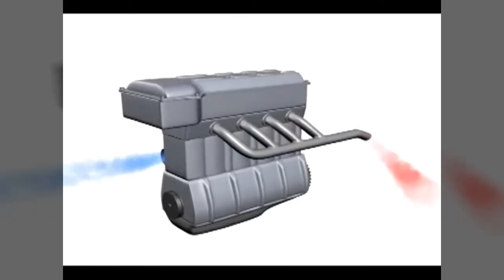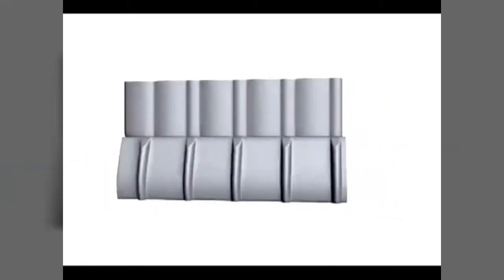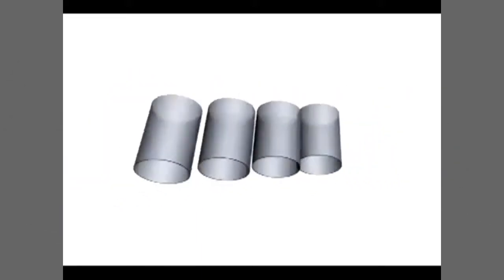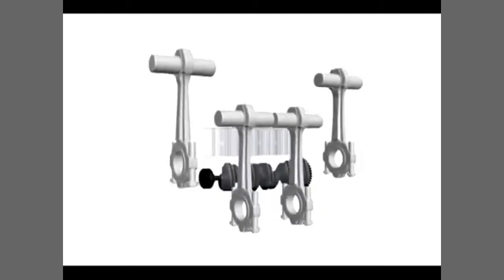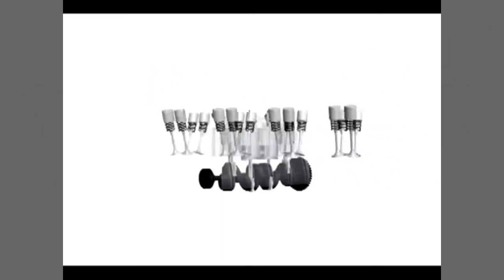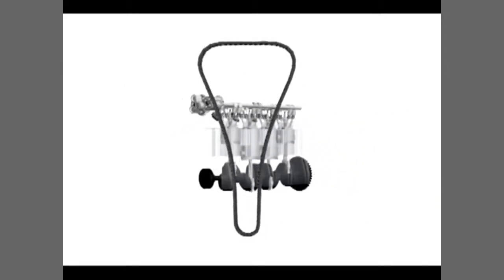Now we'll look at the basic components of an engine. The main components of the engine are the engine block and cylinder head. The internal components of an engine include cylinders, the crankshaft, connecting rods, pistons, spark plugs, fuel injectors, intake and exhaust valves, camshafts, and a timing chain or belt.